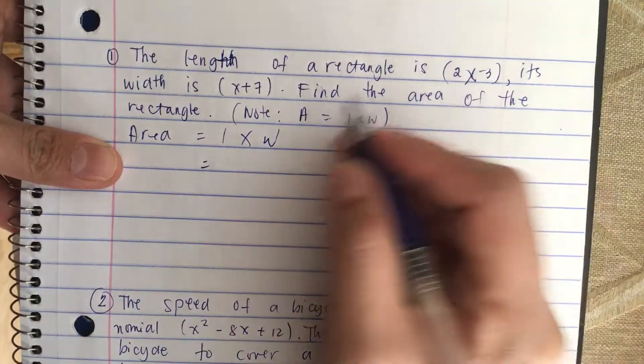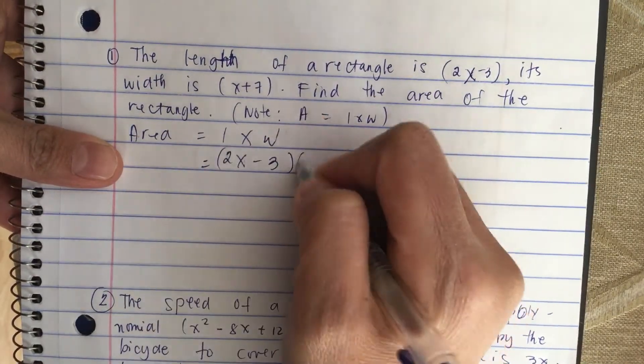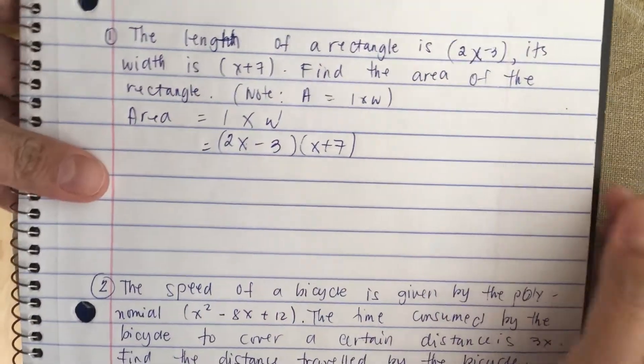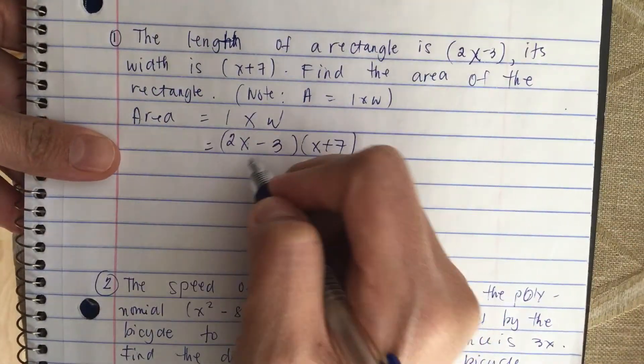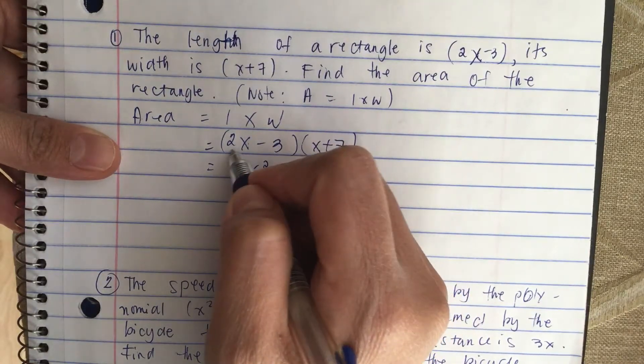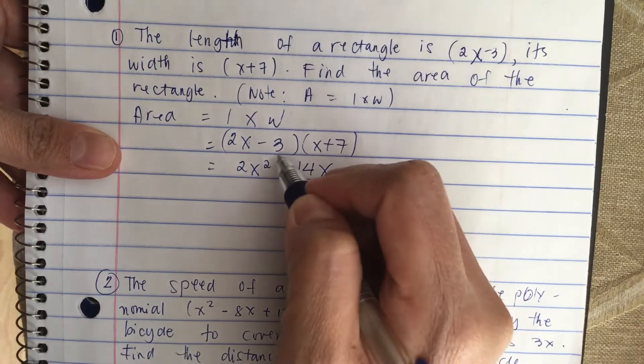So we multiply this to get the area. We have 2x times x is equal to 2x squared, and then 2x times 7 is 14x.